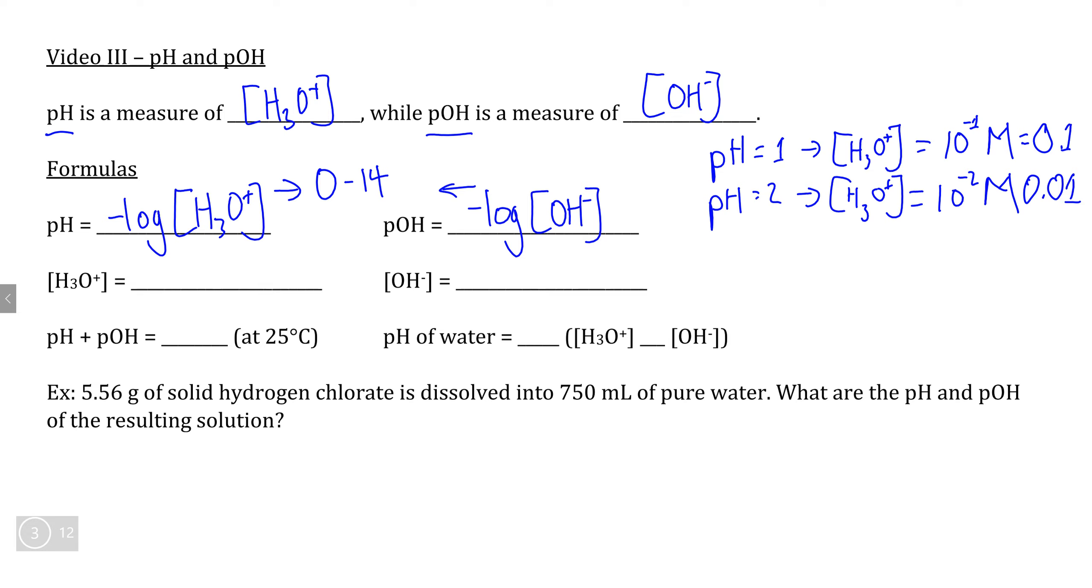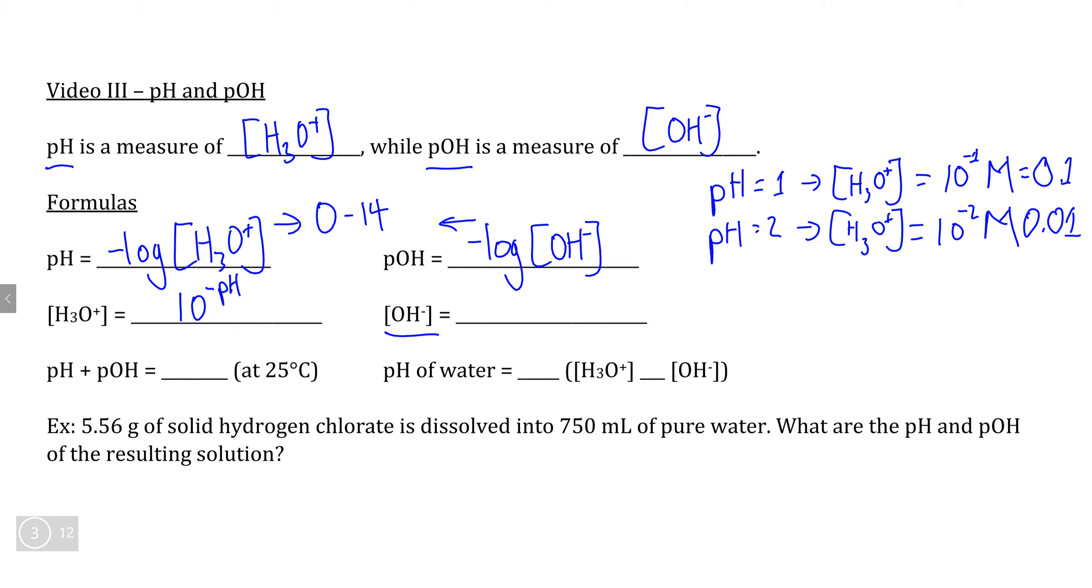This shows how to go backward if you are given the pH or pOH within a question, to find the concentration of H3O+ or OH- using pH or pOH. To do that, simply enter the number 10 and raise it to the exponent of the negative pH on your calculator, and that will give you the concentration of H3O+. Similarly, to find the concentration of OH-, put the base 10 into your calculator and raise it to the exponent of the negative pOH.